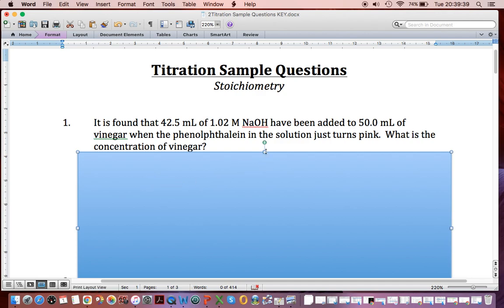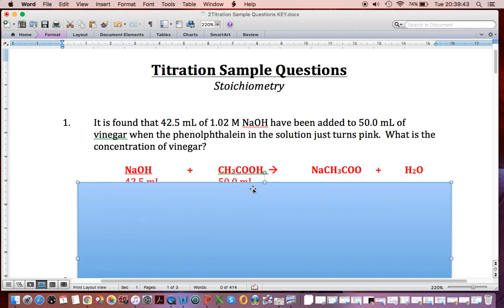We have question number one. If we recall stoichiometry, we need a balanced chemical equation. There it is. There's our sodium hydroxide, and our vinegar is acetic acid. We make sodium acetate and water, and the big thing is it's a one-to-one deal.